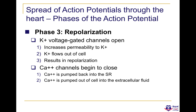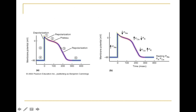Phase three is the repolarization phase. Potassium channels open while calcium and sodium channels remain closed, so there is no more influx of calcium. The only positive ions left in the cell are potassium, which now move out — efflux of potassium causes the membrane potential to rapidly shoot back down to minus 90. This is shown on the graph in phase three, with increased permeability of potassium out of the cell.